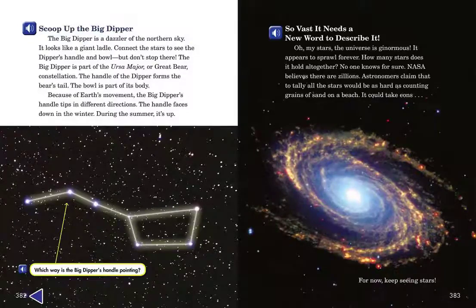Because of Earth's movement, the Big Dipper's handle tips in different directions. The handle faces down in the winter. During the summer, it's up.